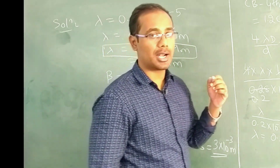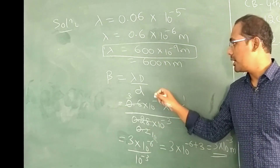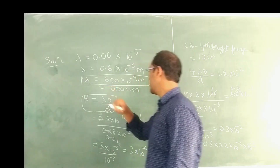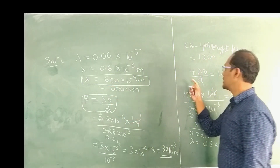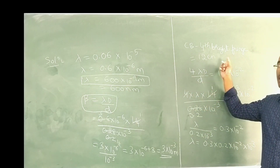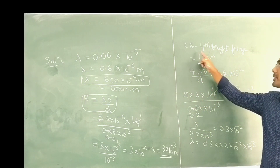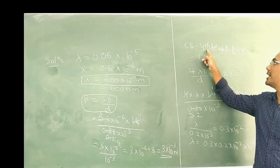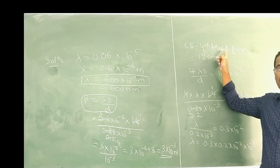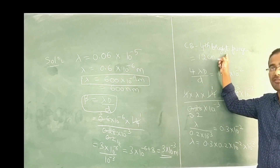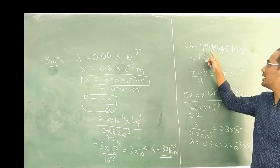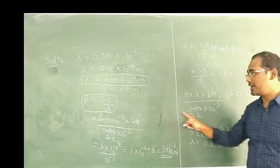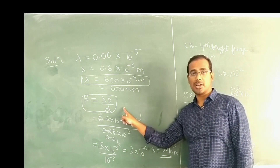This is a very important question. Similar questions can involve finding fringe width and distance between central bright and a bright fringe, or between dark fringes such as the 5th dark or 7th dark fringe, to calculate wavelength and fringe width.